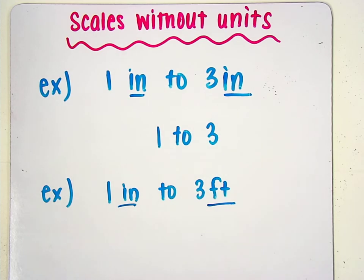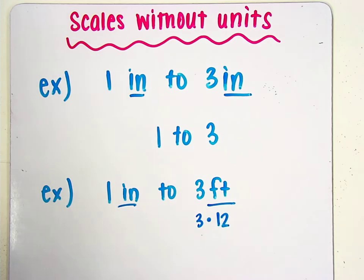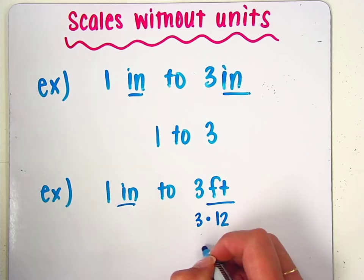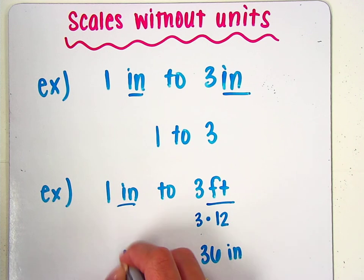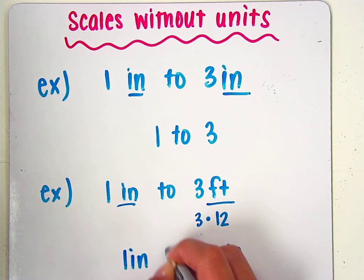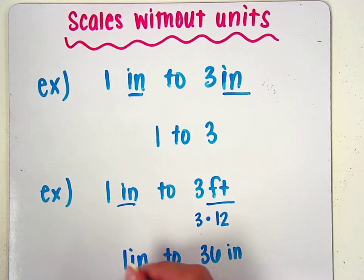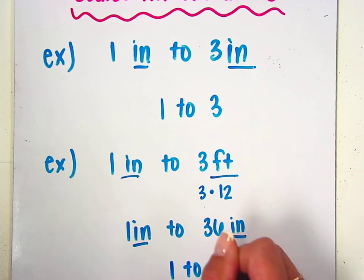Since we know that there are 12 inches in one foot, we can find the number of inches by taking the number of feet and multiplying it by the number of inches in each foot. So three times 12 would give us 36 inches. So now we know one inch represents 36 inches. Now because our units are the same, we can simply drop those units and write our scale as one to 36.